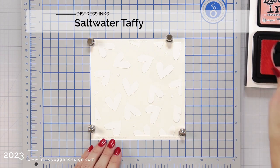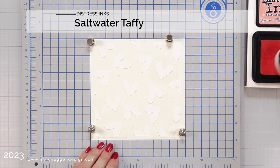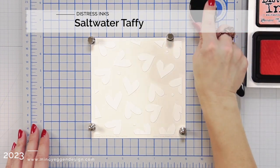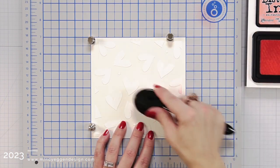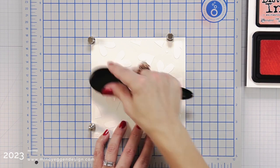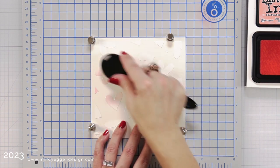So for layer one, I'm grabbing a blending brush and I'm using saltwater taffy distress ink. I'm going to pick up a little bit of that ink, tap off a little bit and then start blending onto my cardstock.